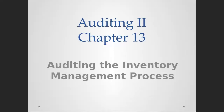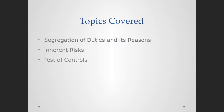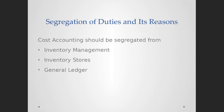We'll start from where we left off. We are in the middle of auditing the inventory process. The three things we're going to discuss today are: segregation of duties and its reasons, the inherent risks, and the test of controls. Let's jump into it. The activity of cost accounting, as we discussed, should be segregated from everything else.